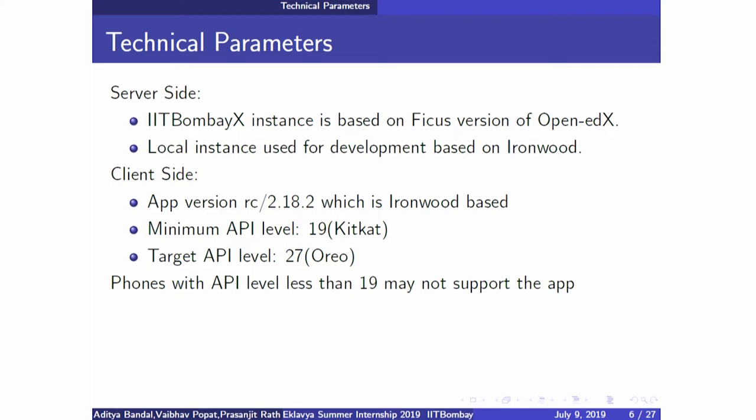IIT Bombay also has to shift to Ironwood sometime, otherwise it will be left behind. We directly went with an app for Ironwood, and even if we try to use it with Ficus we can't, because it doesn't have backward compatibility due to API versioning. Ficus uses API version 0.5 while Ironwood uses version 1.